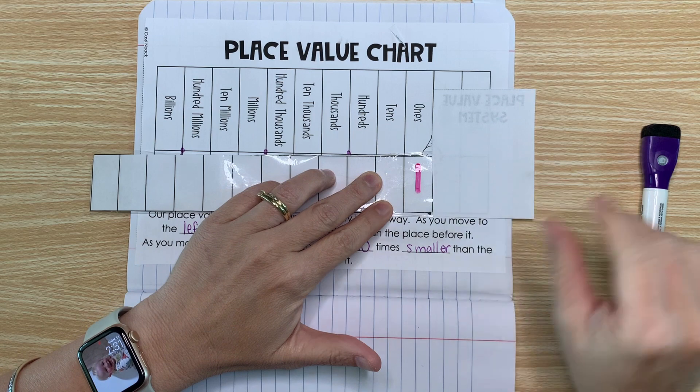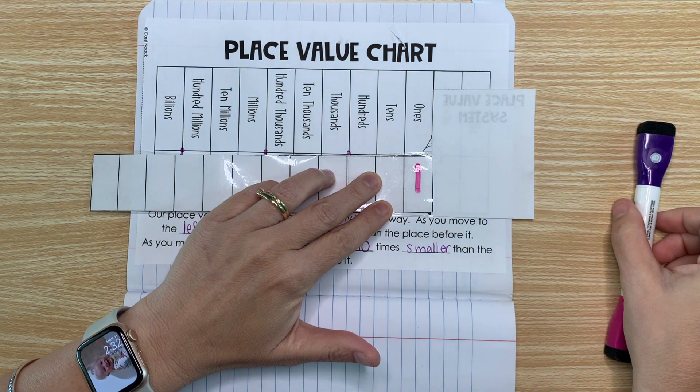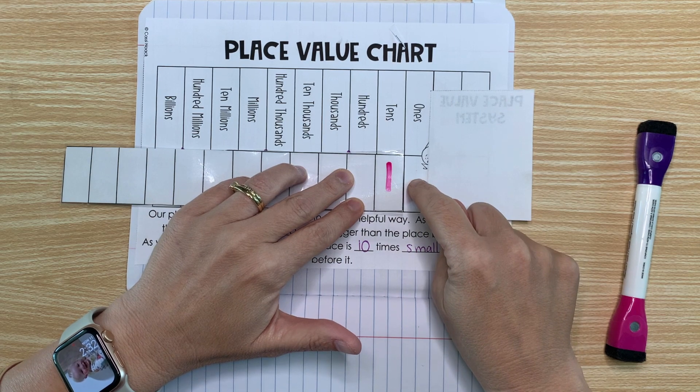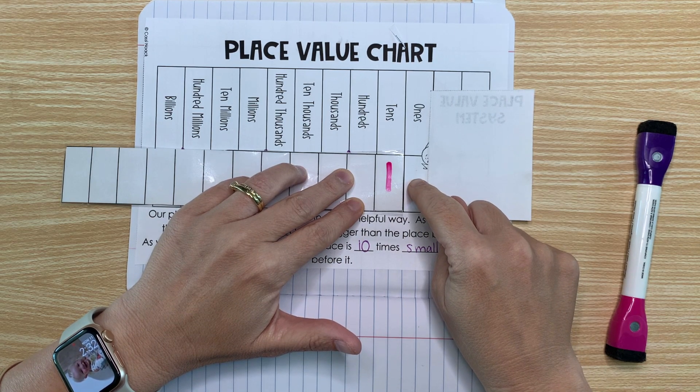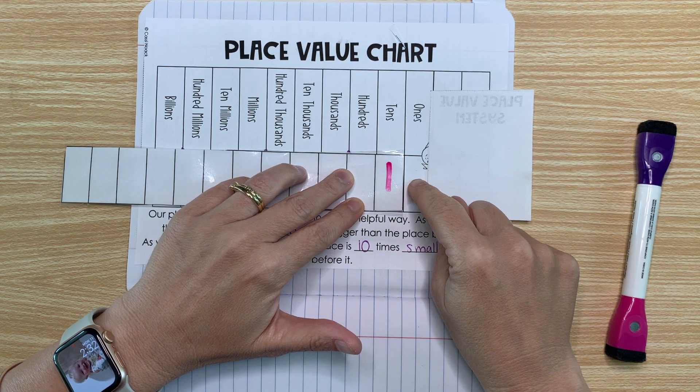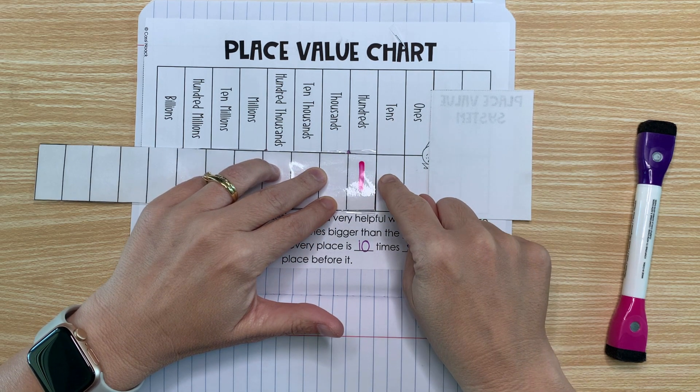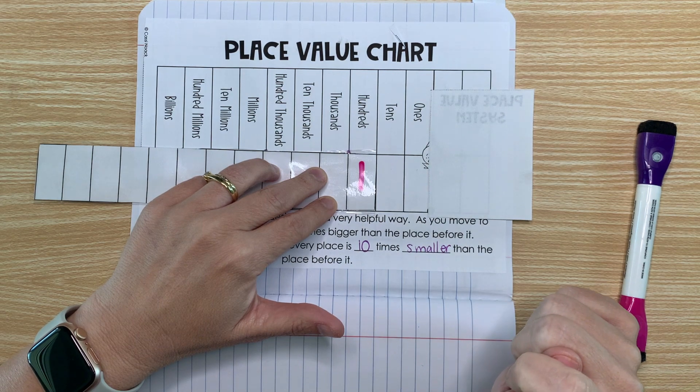Well, what happens if I move it to the left? Well, it opens up a place here where we need a placeholder zero. So the number would be 10. If we moved it again, its value would be 100. Imagine the placeholder zeros in those places.